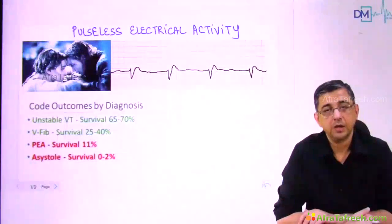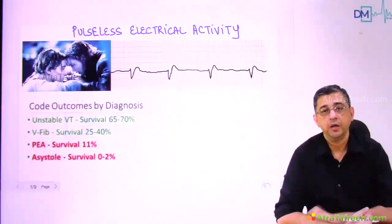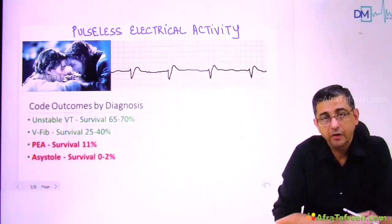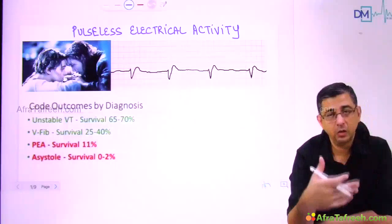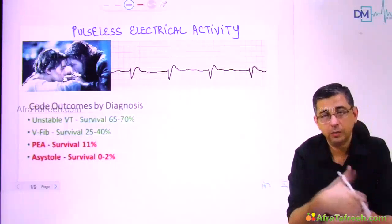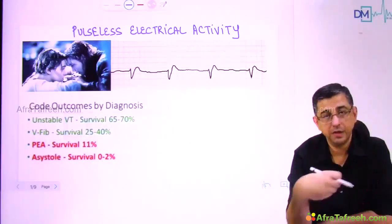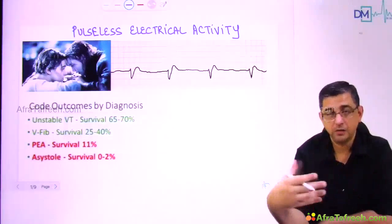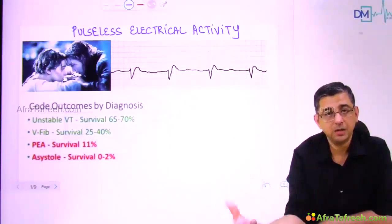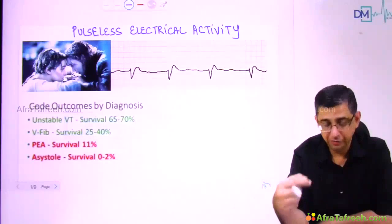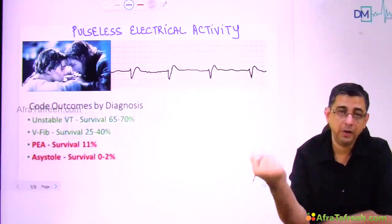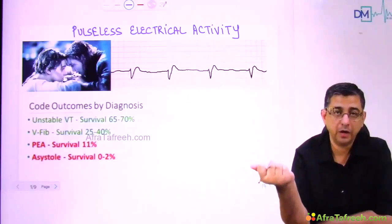Welcome back. We shall now be talking about PEA, that is pulseless electrical activity. In this condition, the electrical part of the heart — the SA node, the AV node, the bundle of His, and the Purkinje system — is working just fine, but still there is no pulse. So our main priority is to find out what is the cause behind development of pulseless electrical activity.